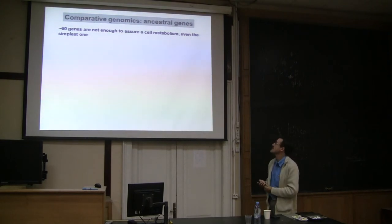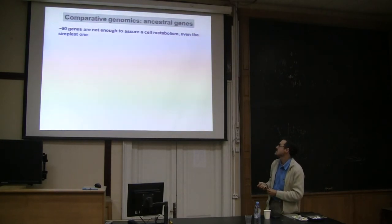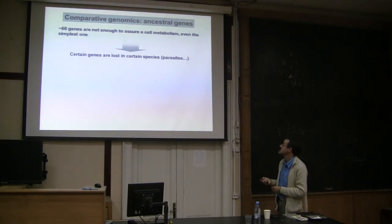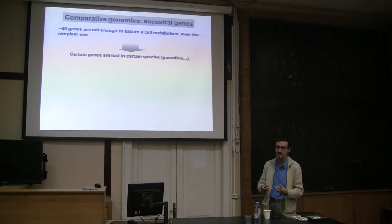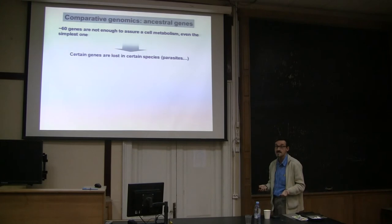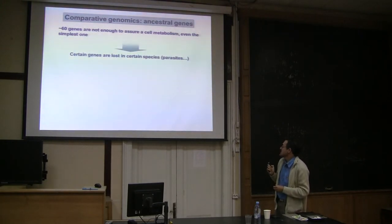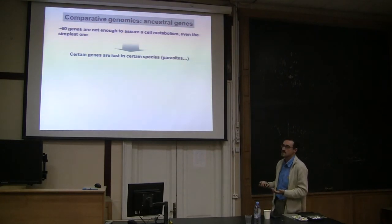However, 60 genes are very few — you cannot really imagine a cell using only 60 genes; even the simplest cell needs more. There are several problems with this approach: genes may have been lost in several species, particularly parasites, which tend to simplify their cell structure and genomes. Parasites lose genes because they can use the host's resources. Because parasites have small genomes, many of the genome sequences available at the beginning of this type of analysis were from parasites, since they were cheap to sequence.